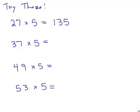37 times 5, you want to take half of 36, which is 18, put a 5 at the end. 49 times 5, you want to take half of 48, which is 24, put a 5 at the end.